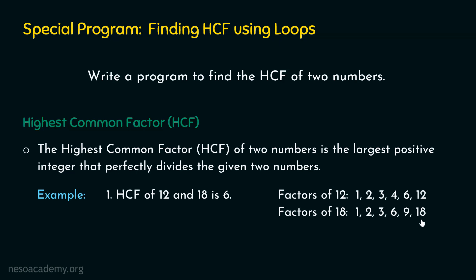So what are all the common factors? We have 1, 2, 3, and 6 — a total of 4 common factors of 12 and 18. But what is the highest common factor out of these? The highest is 6. Therefore, HCF of 12 and 18 is 6, because this is the largest positive integer that perfectly divides 12 and 18. I hope the meaning of HCF is now completely clear.